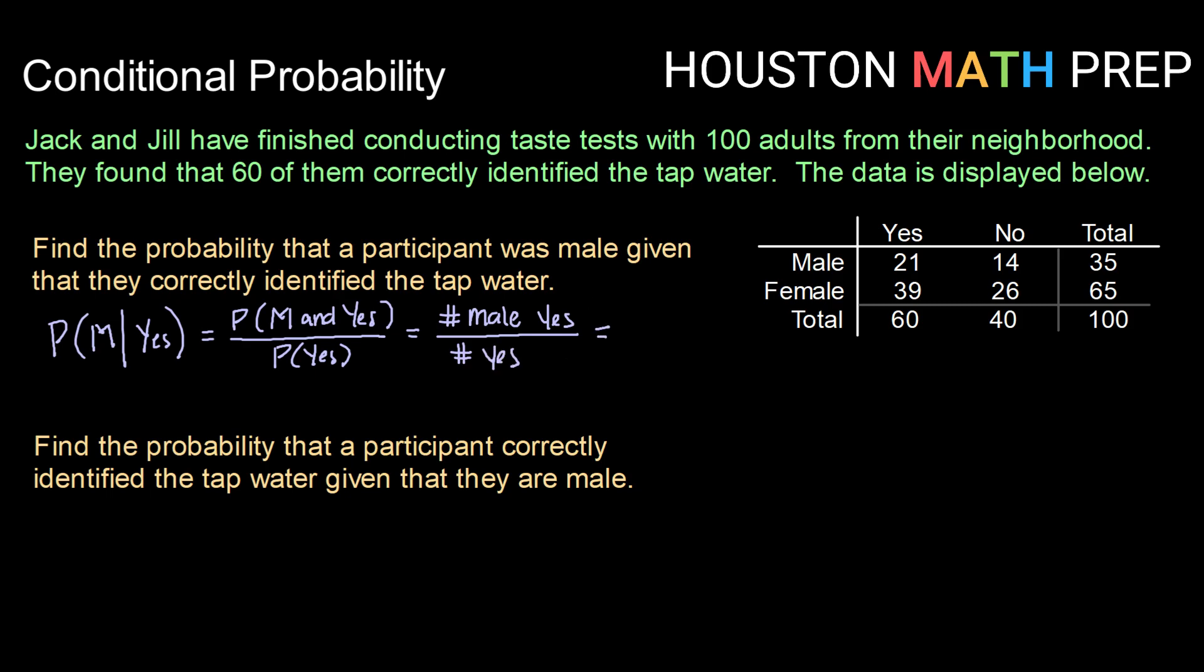So using that idea, looking at our table, the number of male participants that correctly identified the tap water is 21, and the total number that correctly identified the tap water is 60.